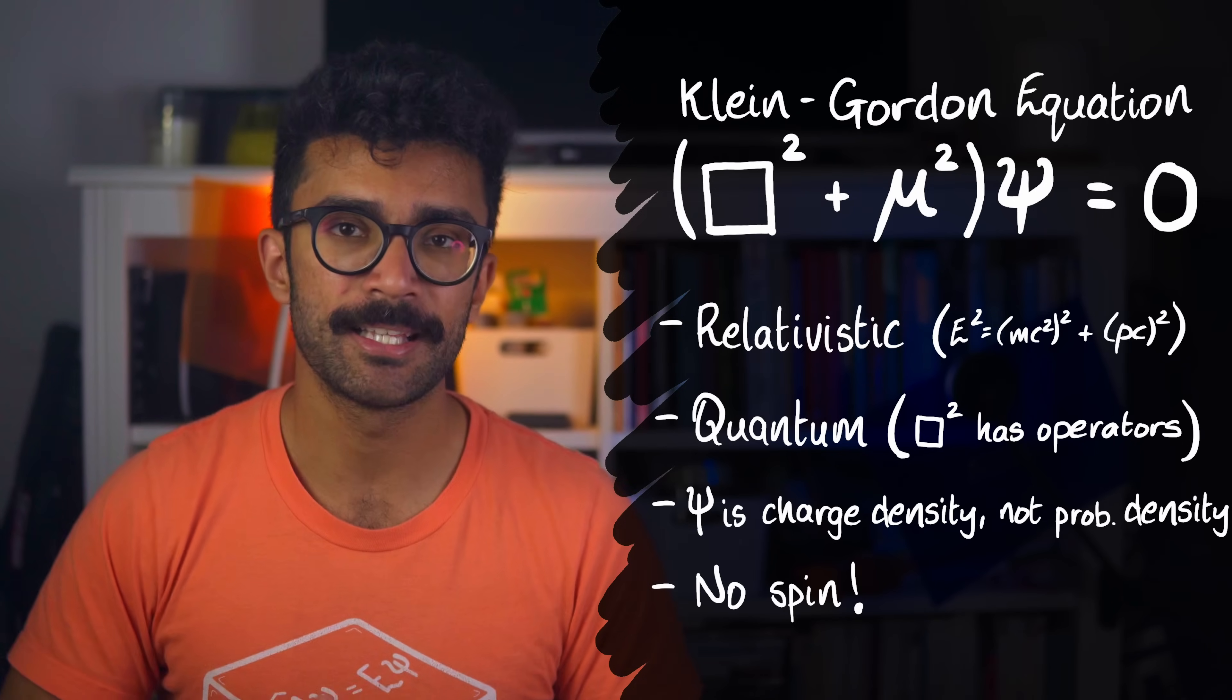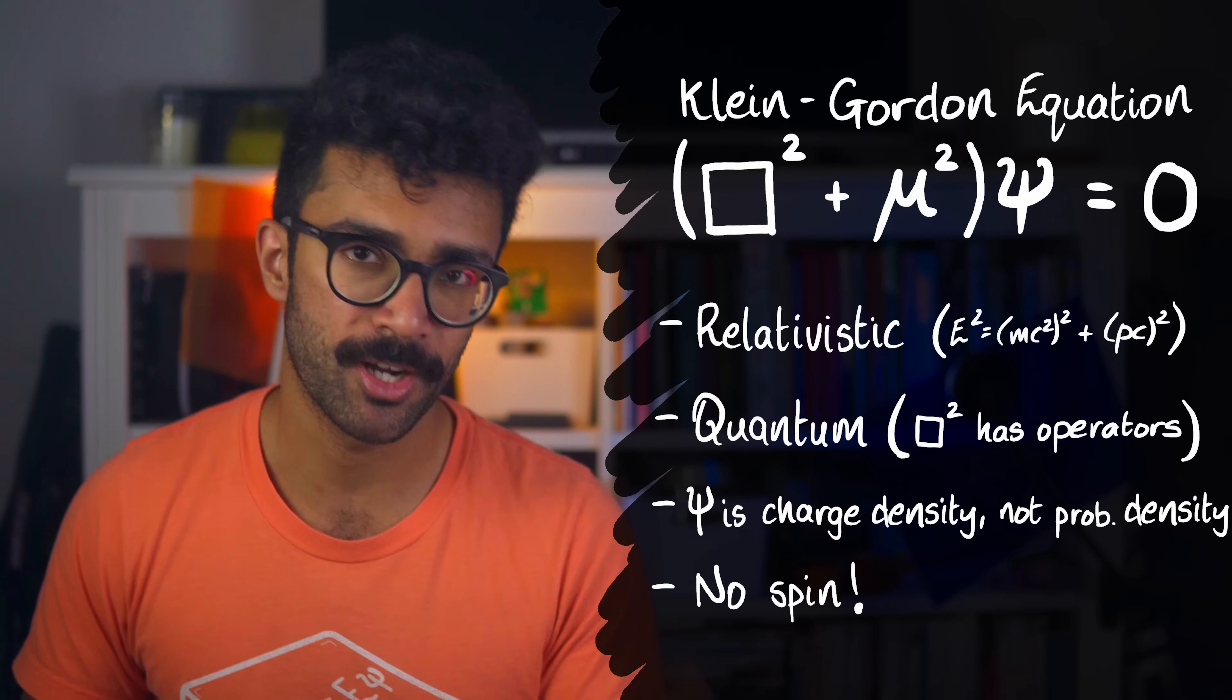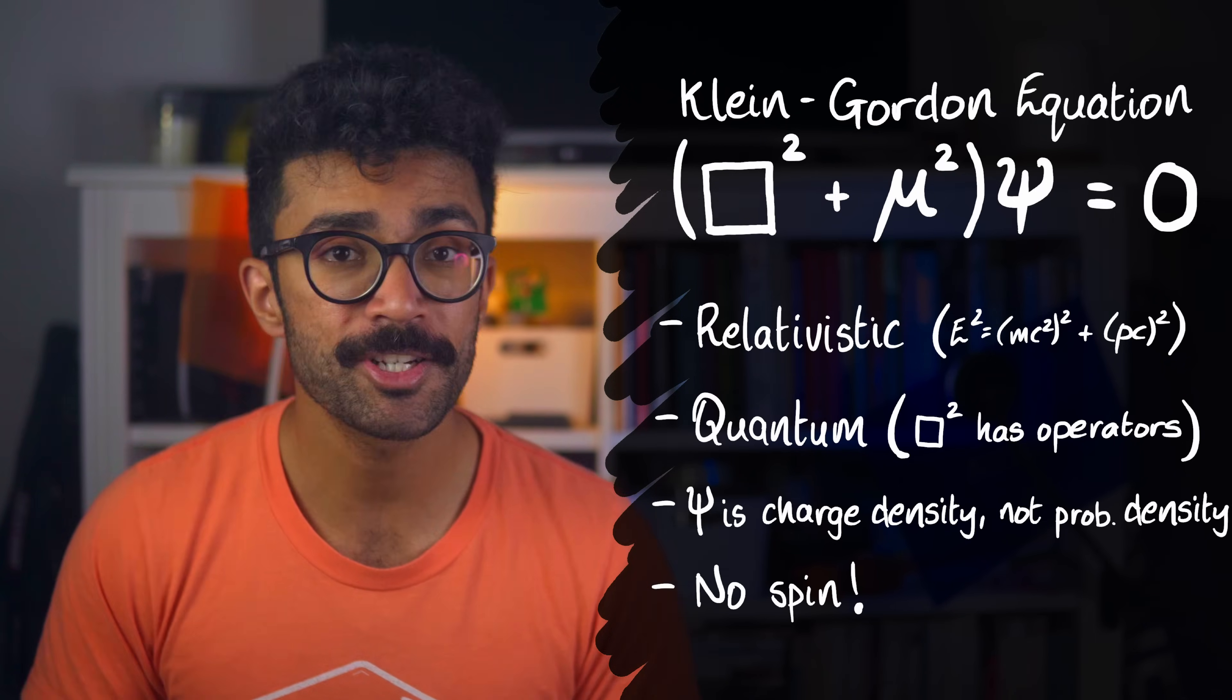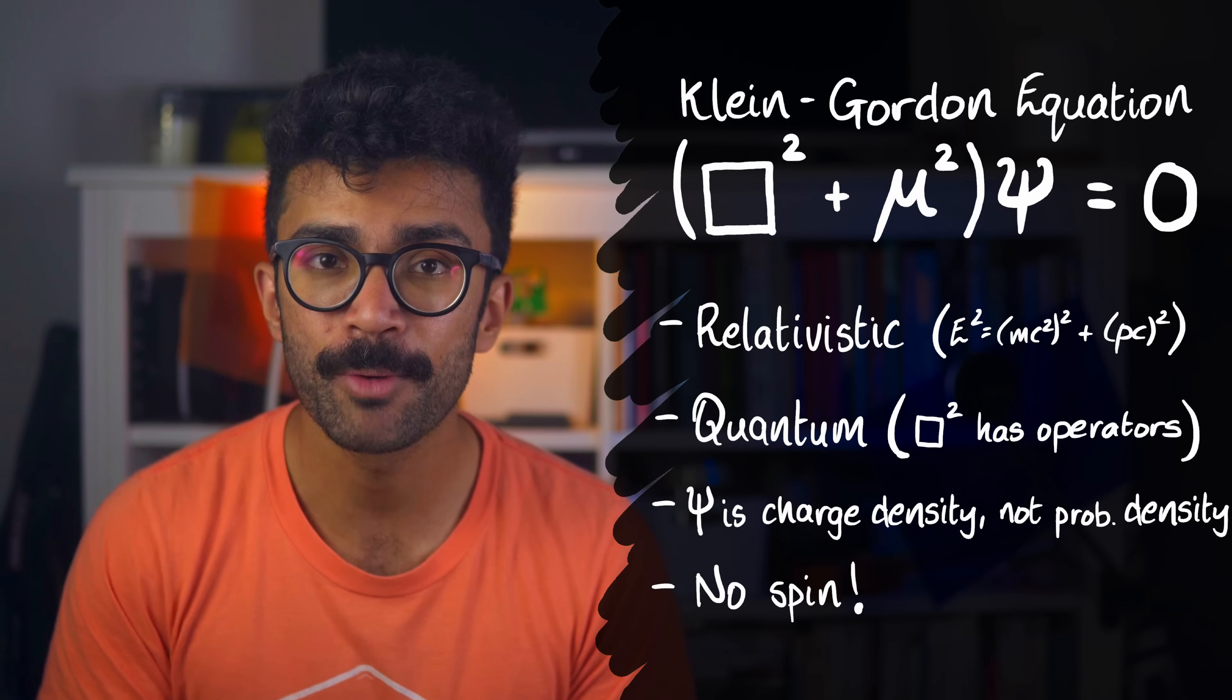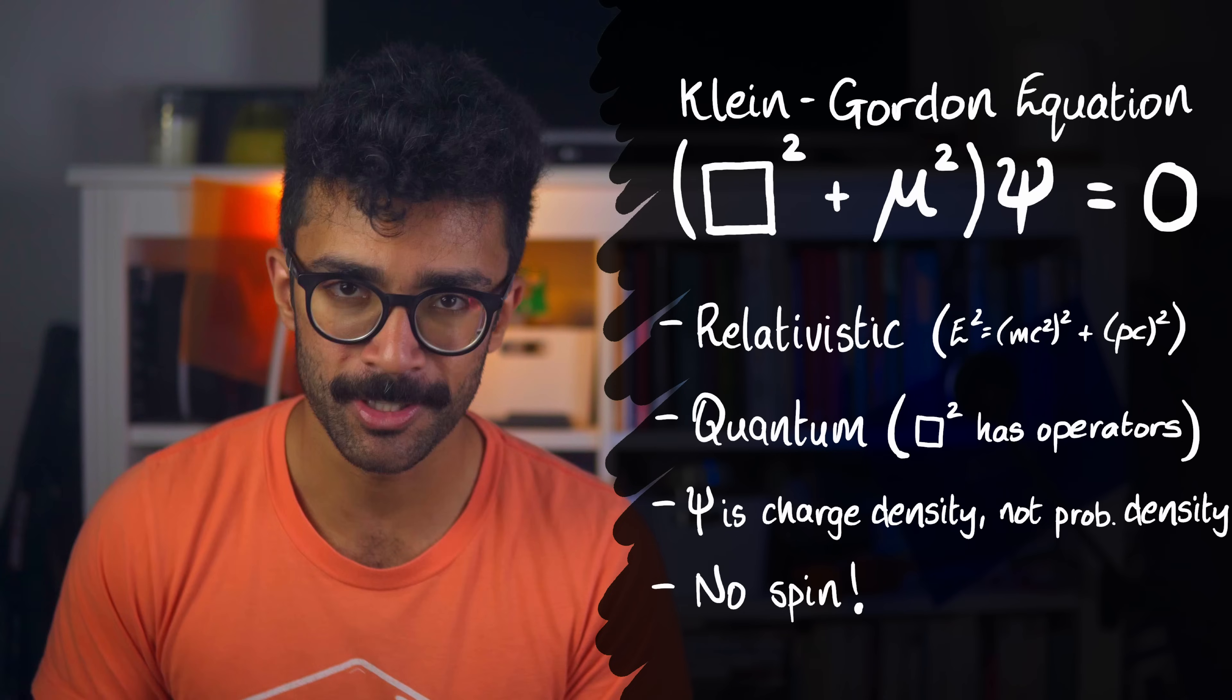Although it's a wonderful first step towards combining special relativity and quantum mechanics into one neat equation, it's also limited in that it doesn't account for a particle property called spin. Spin is a quantity that particles can possess, just like charge and mass. And it's a measure of how much angular momentum a particle naturally has, even when it's not rotating or moving along a curved path.